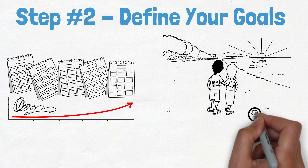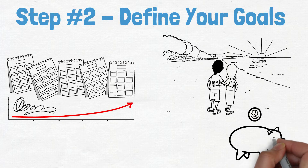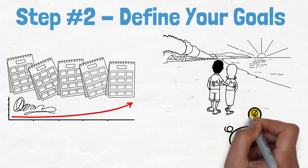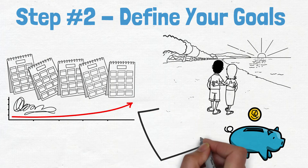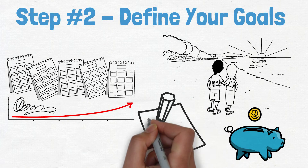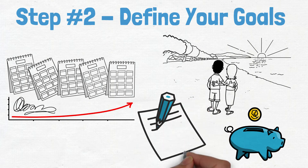Since this is a one-page retirement plan, your goal might be to reach a certain number in savings so you can retire early. No matter what your goal is, writing it down is an important step to making it happen.